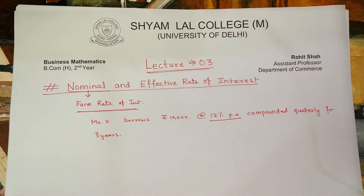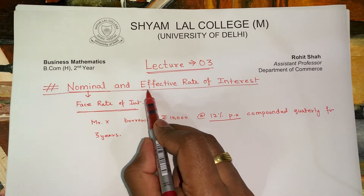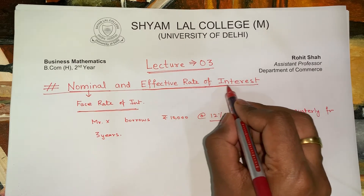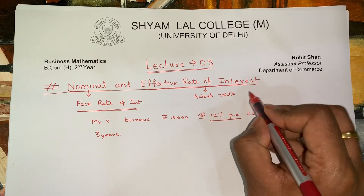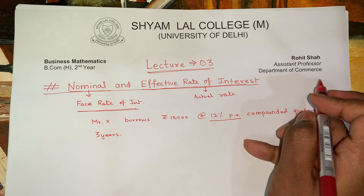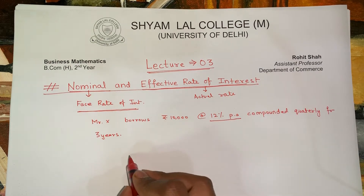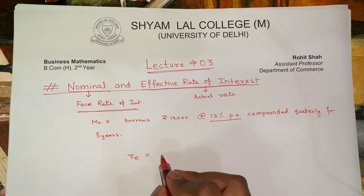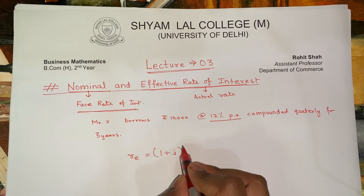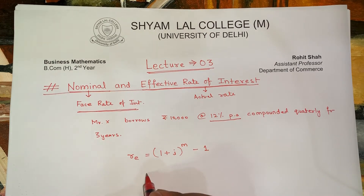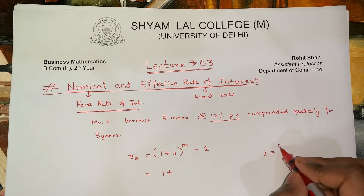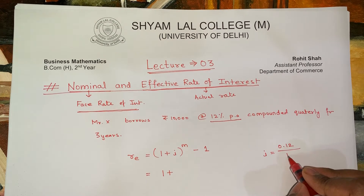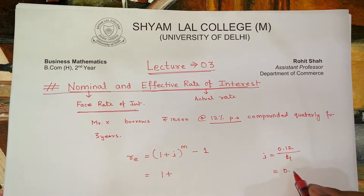Then the question comes: what is the effective rate of interest? Effective rate of interest is the actual rate that the customer ends up paying. In this case, the effective rate of interest is computed by (1 + i)^m − 1, where i = r/m. Here r is 0.12 and it is compounded quarterly, so m is 4, making i = 0.03.